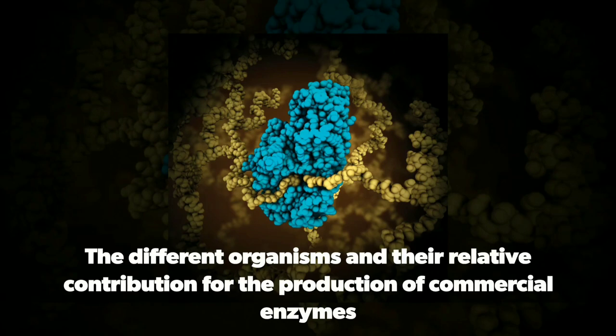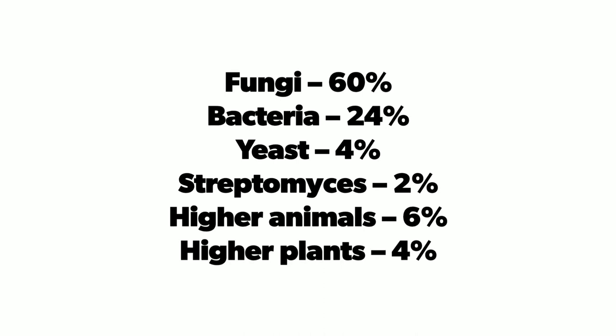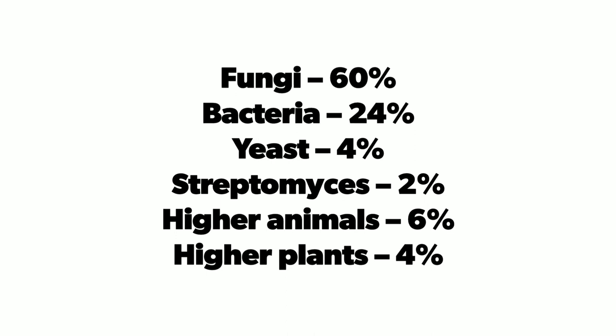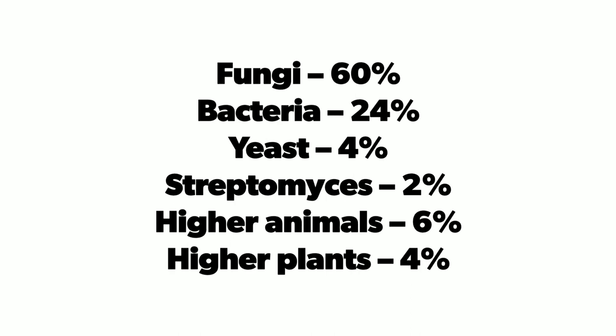Different organisms and their relative contribution to the production of commercial enzymes are as follows: fungi 60%, bacteria 24%, yeast 4%, Streptomyces 2%, higher animals 6%, and higher plants 4%.